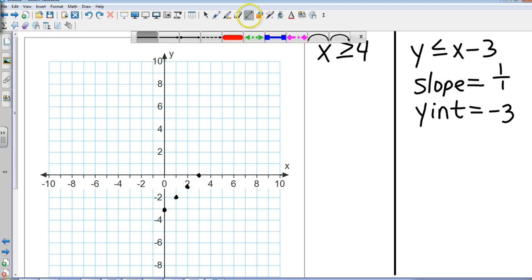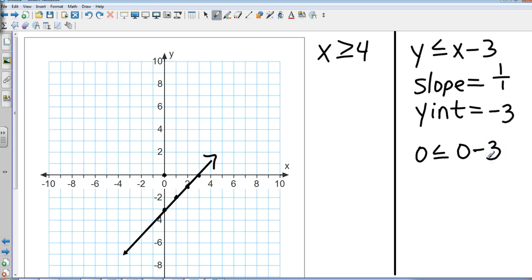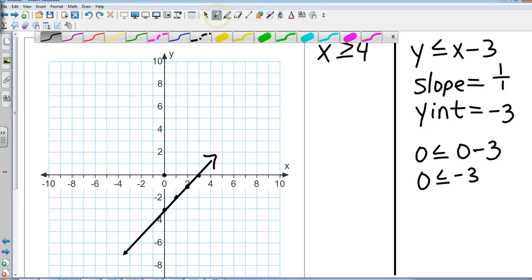This is less than or equal to, so I know this is going to be a solid line. Now the question will be where do I shade. I'm going to pick out my point again like we did before—my point of zero zero—and I'm going to substitute it into my equation. Is zero less than or equal to zero minus three? So is zero less than or equal to negative three? Of course, zero is not less than or equal to negative three.